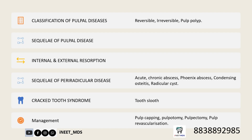You should know about the sequelae of periradicular disease and how it progresses. Know about acute and chronic periapical abscesses — whether symptomatic or asymptomatic. When there is an acute exacerbation of a chronic abscess, it is called a phoenix abscess. Know about condensing osteitis — how it presents radiographically — and about radicular cyst, and the difference between a cyst, an abscess, and a granuloma.